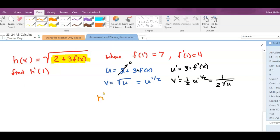So h prime is 3f prime of x times 1 over 2 square root of u, and u is 2 plus 3f of x. Now every x gets that number 1, because we wanted h prime at 1.